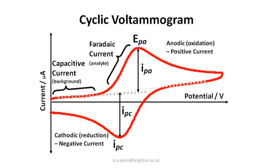The current observed is proportional to the concentration. Once oxidised, the potential is reversed and now we can see a reduction peak, and in that reduction peak the potential applied is based on the characteristics of that molecule.